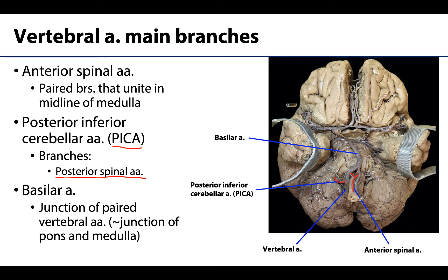At around the junction of the medulla and the pons — you can see the pons here and the medulla here — the two vertebral arteries come together to form the basilar artery. The basilar artery is an unpaired artery; many of the arteries we're discussing are paired with a right and left, but the basilar artery is unpaired. It is named due to its close relationship with the cranial base, running down the midline of the pons near the basilar part of the occipital bone, or the clivus.